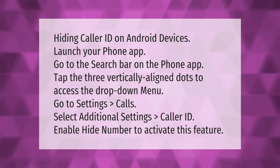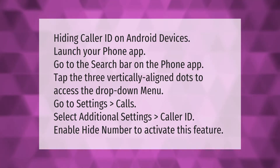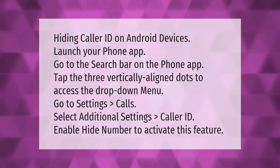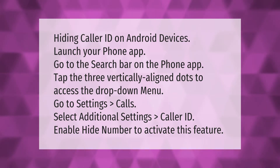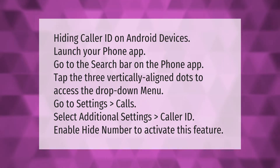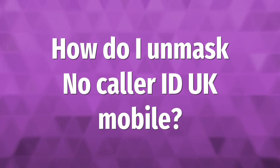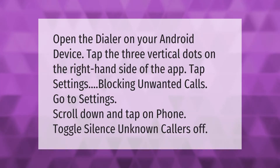Hiding caller ID on Android devices: launch your phone app, go to the search bar, tap the three vertically aligned dots to access the drop-down menu, go to Settings, then Calls, select Additional Settings, then Caller ID, and enable Hide Number to activate this feature.